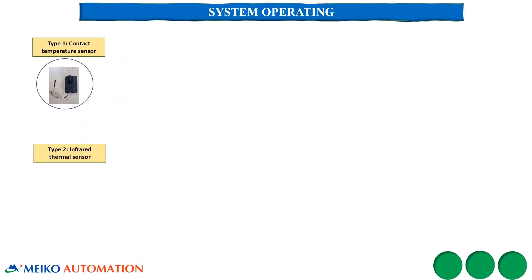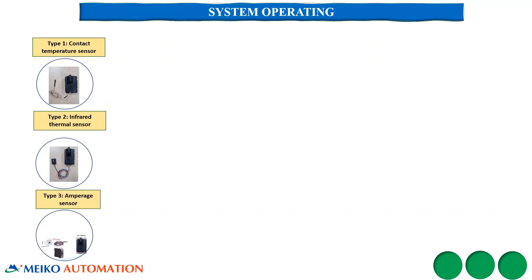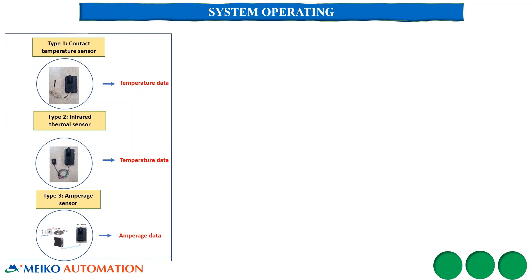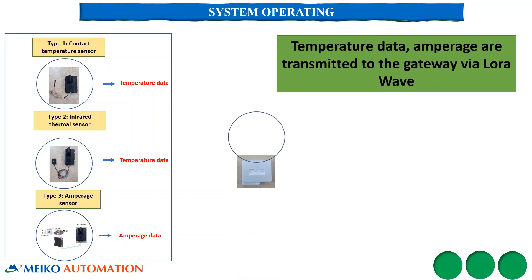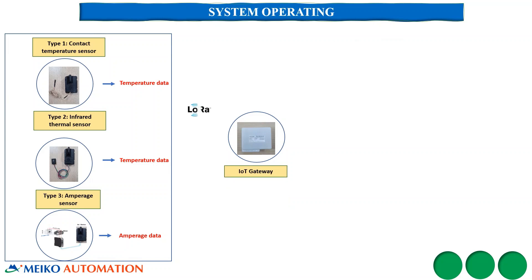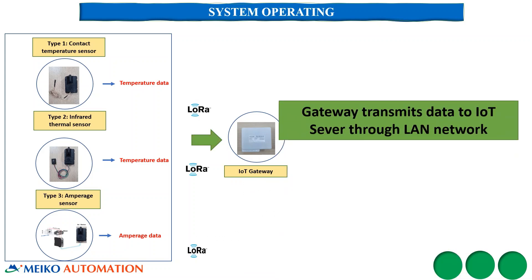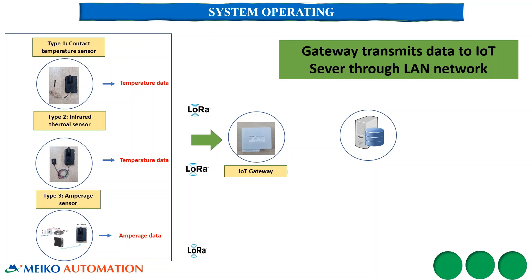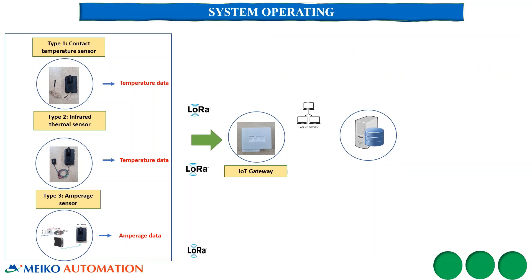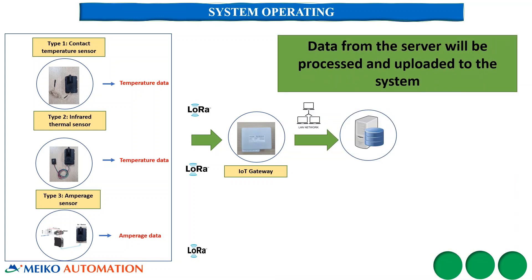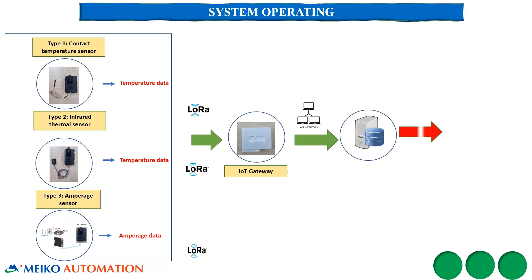The system consists of different types of sensors: Type 1, contact temperature sensor; Type 2, infrared thermal sensor; and Type 3, amperage sensor. Temperature and amperage data are transmitted to the gateway via LoRaWAN. Data from the gateway is sent to the server via LAN, then processed and uploaded to the system website for monitoring and warning purposes.